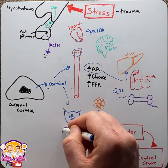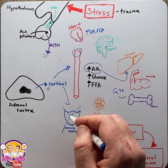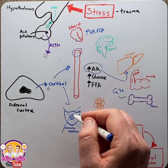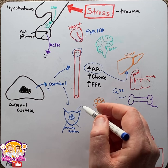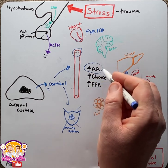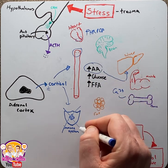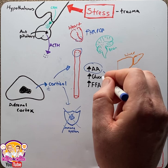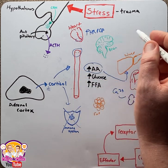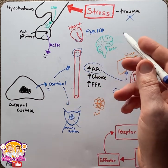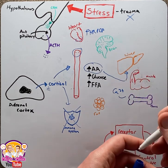Cortisol will suppress immune function, specifically inflammation, and increase wound healing. This is thought to be the result of increasing building blocks within the blood, which improves tissue repair. All of these effects help to mitigate the original stressor and hopefully return the body back to homeostasis.